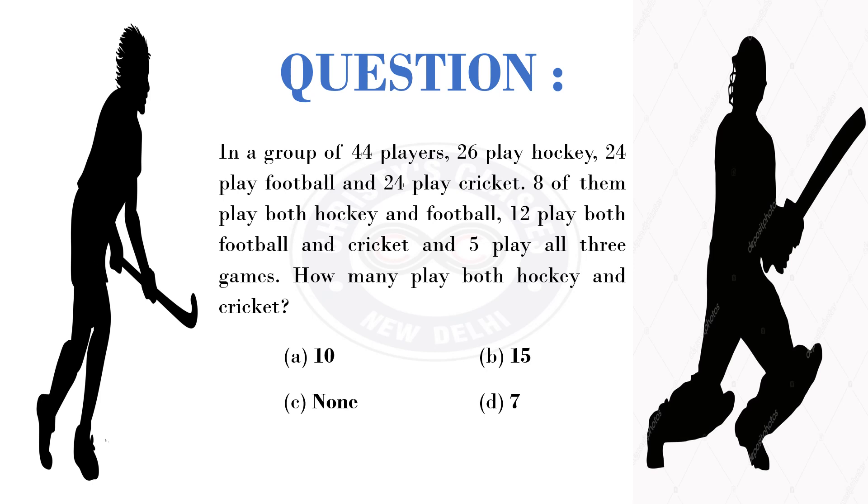8 of them play both hockey and football, 12 play both football and cricket, and 5 play all 3 games. How many play both hockey and cricket? Options A: 10, B: 15, C: none, and D: 7.